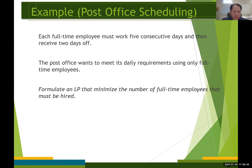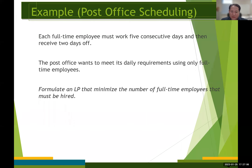The union rules state that each full-time employee must work five consecutive days and then receive two days off. For example, the employee who works Monday to Friday must be off on Saturday and Sunday. The post office wants to meet its daily requirements using only full-time employees. You are required to formulate an LP model to minimize the total number of full-time employees that must be hired.